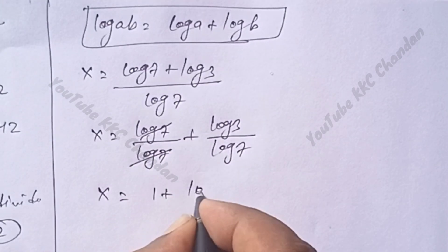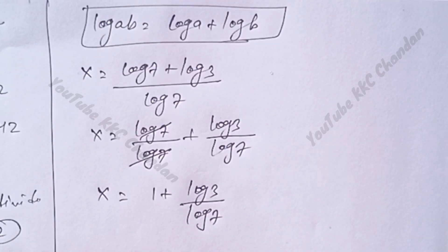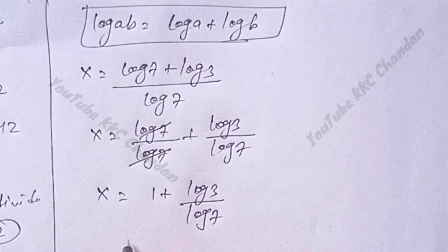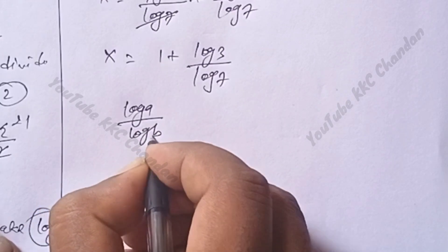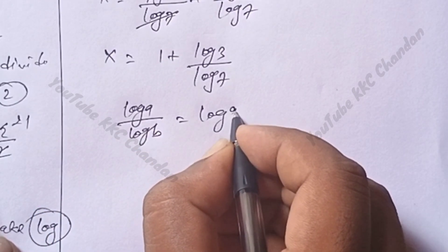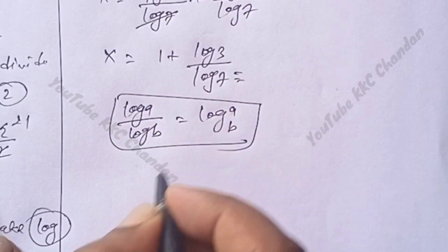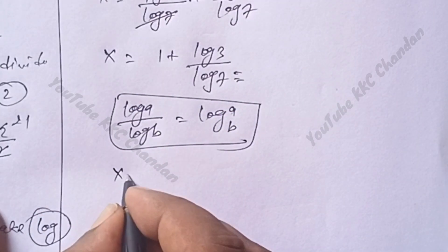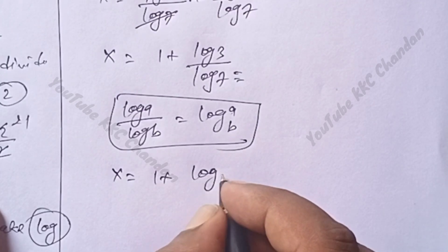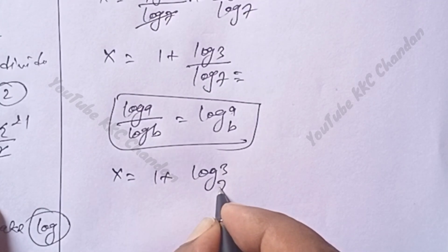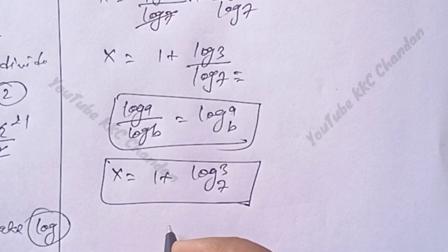Since log 7 divided by log 7 cancels to 1, x equals 1 plus log 3 divided by log 7. We know that log a divided by log b equals log base b of a. Applying this rule, x is equal to 1 plus log base 7 of 3. This is the final value of x.